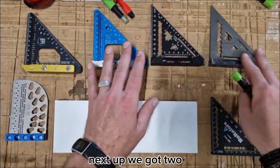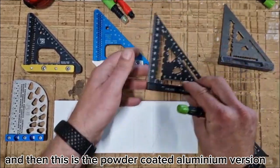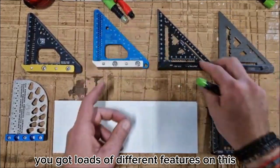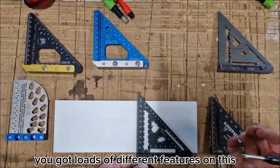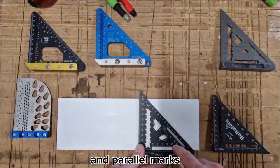Next up we've got two versions from Martinez. This is the titanium blade version and this is the powder coated aluminum version. Both really nice squares with loads of different features. Again, you've got square angles down here and parallel marks.